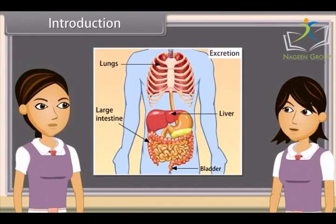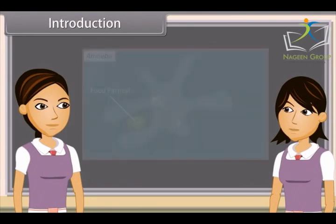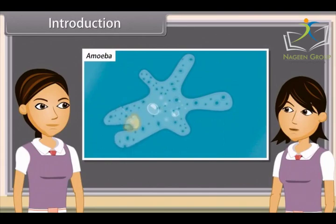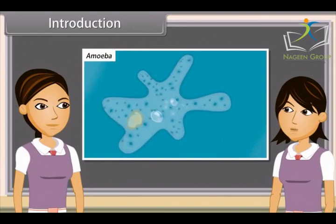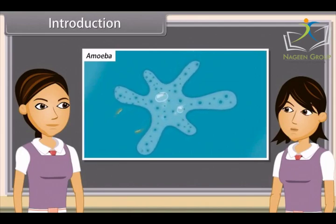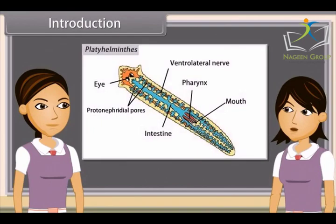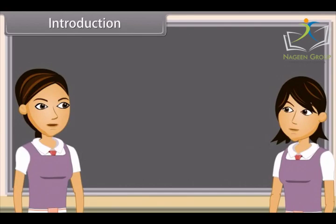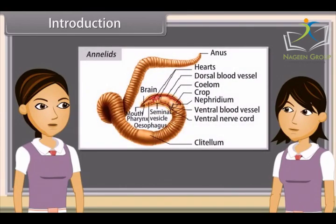The process of excretion is different in different organisms. Unicellular organisms remove these wastes by simple diffusion from the body surface into the surrounding water. In amoeba, it is done through the plasma membrane, while complex multicellular organisms use specialized organs. In platyhelminthes, excretory organs are protonephridia or flame cells. While in annelids, it is nephridia.